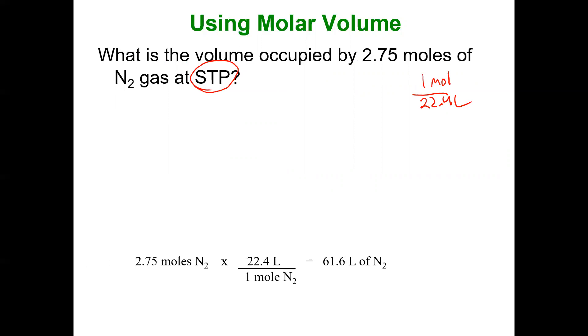So if I have 2.75 moles in one mole of nitrogen, there's 22.4 liters. I see the unit of moles cancel, and I'm left with the unit of liters, 61.6 liters. Three sig figs in my final answer because that's what I started with.